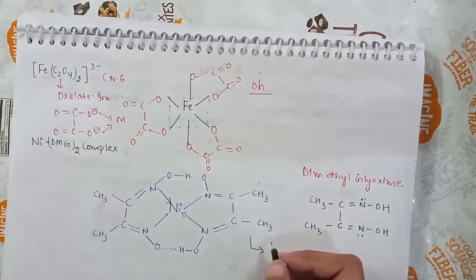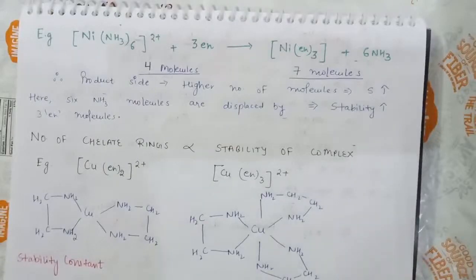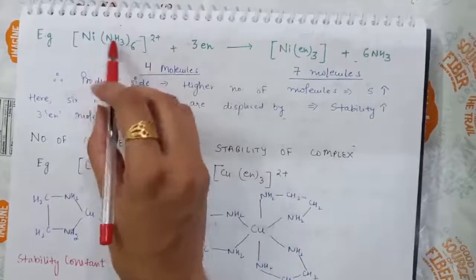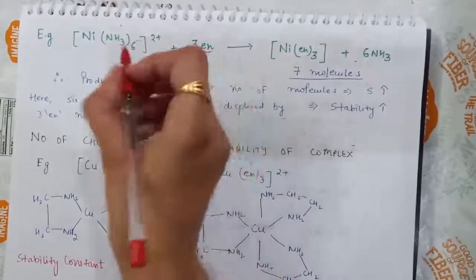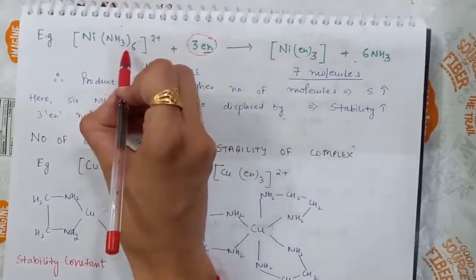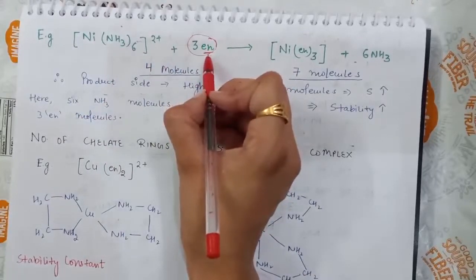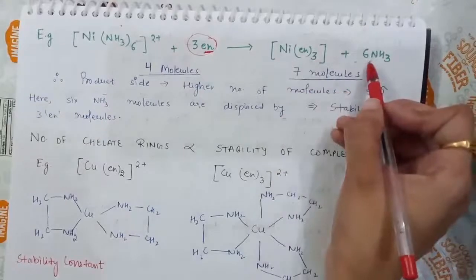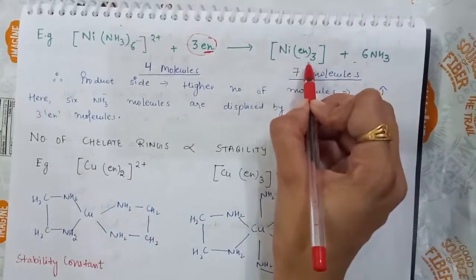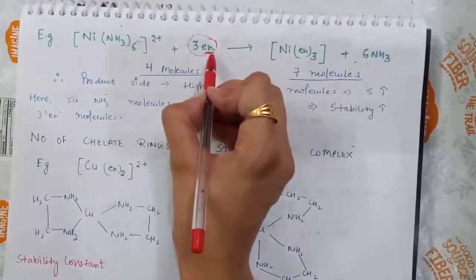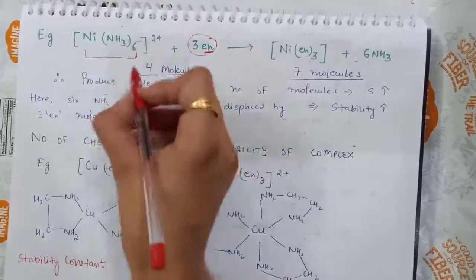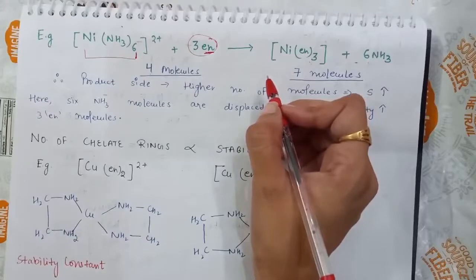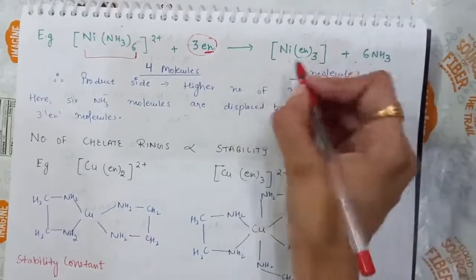To show how chelation increases entropy, consider the reaction of a nickel-ammonia complex with ethylene diamine ligand. In this reaction, 3 EN molecules displace 6 ammonia ligands to form Ni(en)3, which is a chelate complex. On the reactant side there are 3 EN molecules plus 1 complex ion — 4 molecules total. If the product side has more molecules, entropy has increased and the resulting complex is stable.